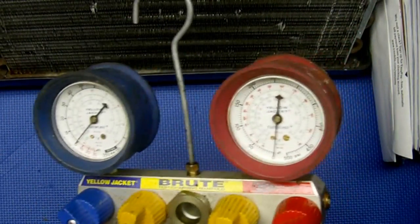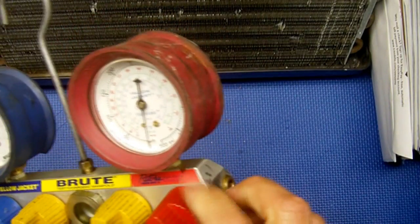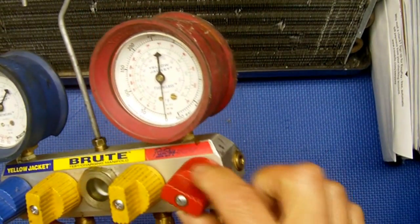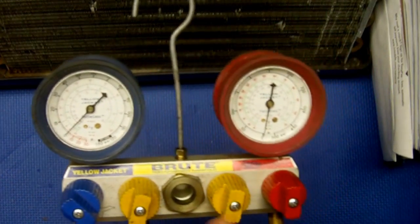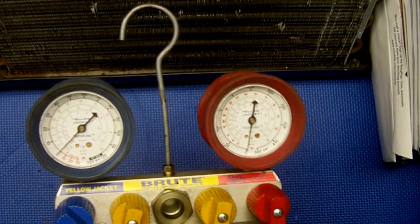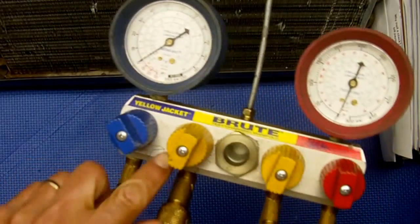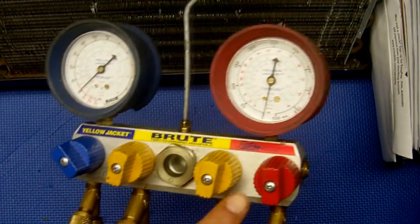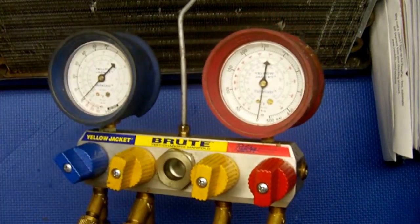The only thing with this gauge manifold is there's a rubber gasket inside that goes bad after a couple of years and you have to replace it because otherwise it starts leaking. Sometimes it's a pain - you're at a job and it's working fine, and the next minute you get a leak.